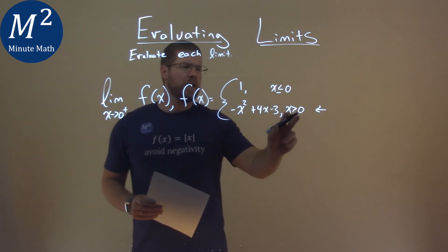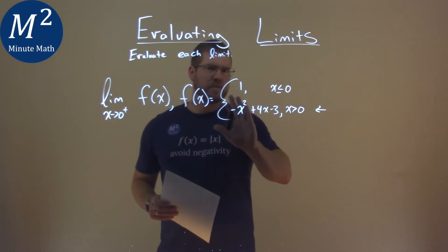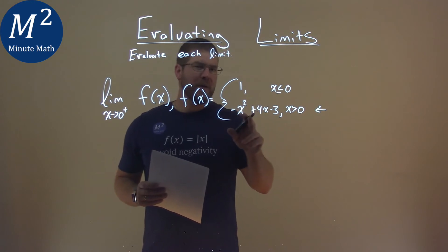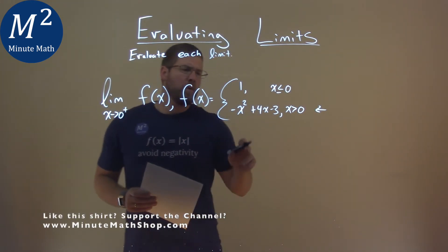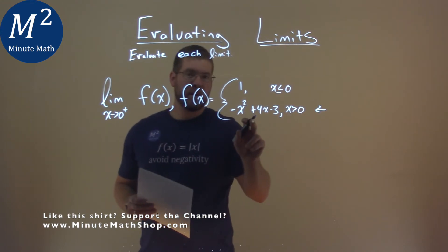So if we're approaching from the right and we know it's essentially unrestricted domain, we actually can just plug in that value because it's continuous. So we can plug in when x is zero here to find what this limit is going to be.